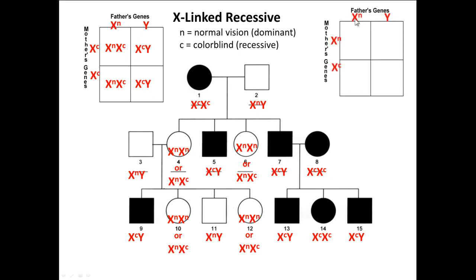Looking at a different cross with a normal father and a carrier mother: again, half the offspring are male and half are female. Half of the sons — 50% — are colorblind, none of the girls are colorblind, but both of them are carriers. Based on this Punnett square, we can eliminate the other possibility — both of these girls are carriers. In a third cross with a normal father and a carrier mother, 50% of the sons get the disease, and both daughters are normal, with 50% likely being carriers and 50% normal. So what we see in sex-linked traits is that they're carried by the female part of the family but show up in the male part of the family.